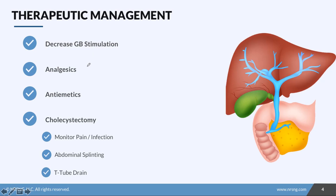To manage cholecystitis, the first and most important thing is to decrease gallbladder stimulation. We can keep the patient NPO — if there's no food coming in, nothing will stimulate the gallbladder. We can also place an NG tube to decompress the stomach, so that not even stomach acid can make its way into the duodenum, resulting in very little stimulation of the gallbladder.